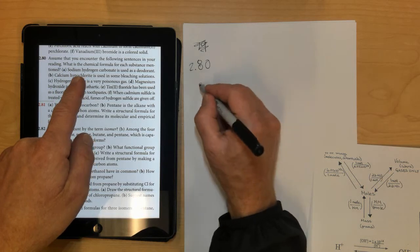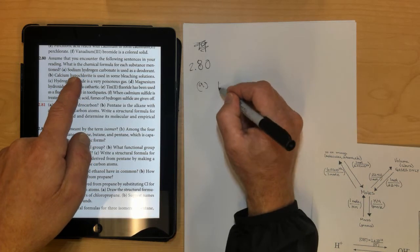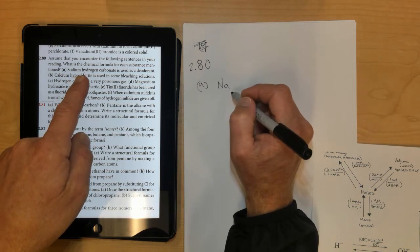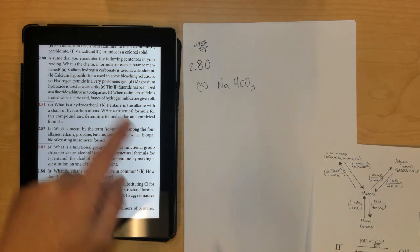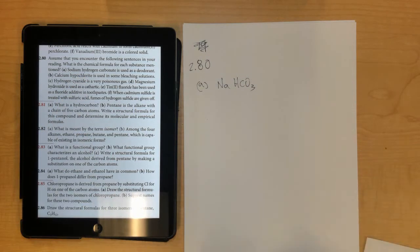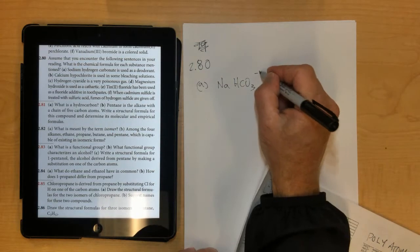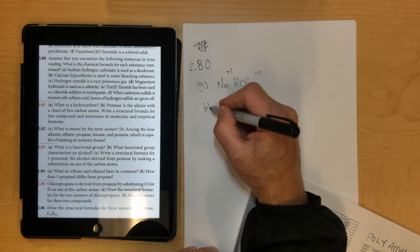Sodium hydrogen carbonate is used as a deodorant. So sodium hydrogen carbonate would be Na, and then hydrogen carbonate is HCO3. If you don't know what the polyatomic ion is, you'll have to look it up on the back. Hydrogen carbonate has a negative 1 charge, and sodium is plus 1, so that's the formula.